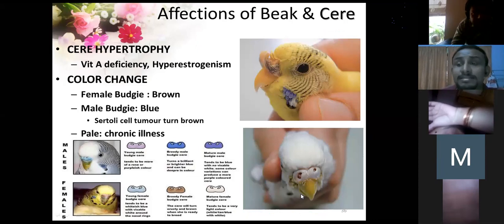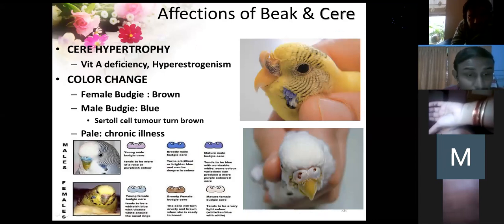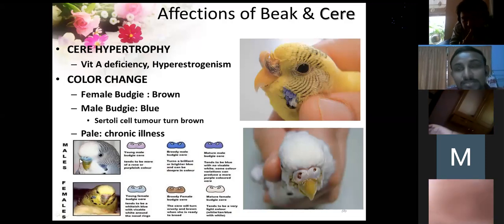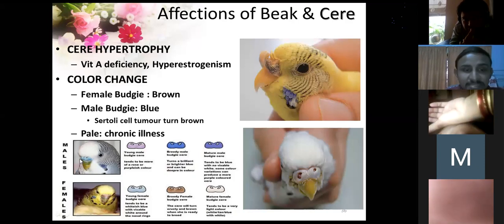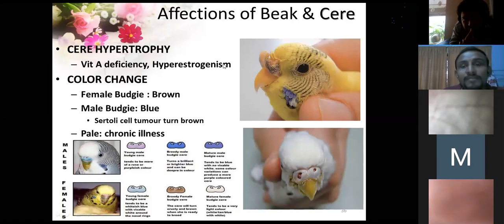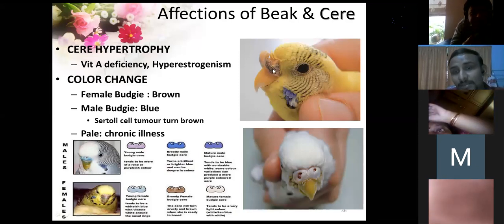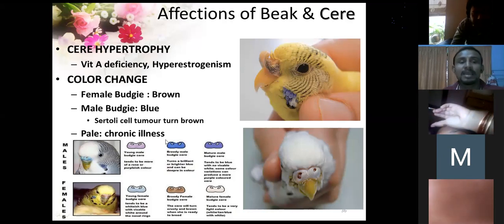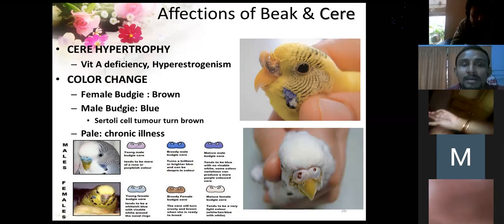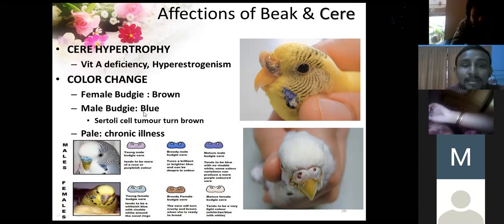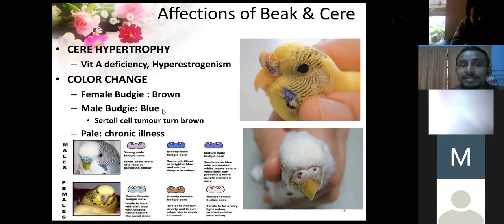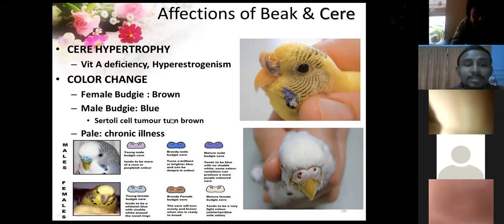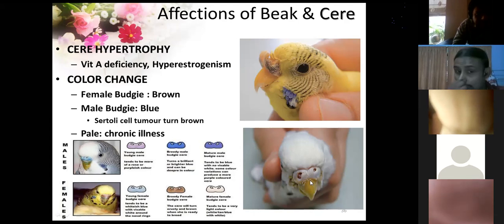The cere is the structure around the nasal opening seen in parakeets and budgies. In vitamin A deficiency and hyperestrogenism, the cere undergoes hypertrophy. In budgies you can use sexual dimorphism — female budgies have a brown cere during the breeding season and male budgies have a blue cere. A male budgie with testicular neoplasia will have its blue cere turn to brown due to the estrogen effect. A pale cere indicates chronic illness.